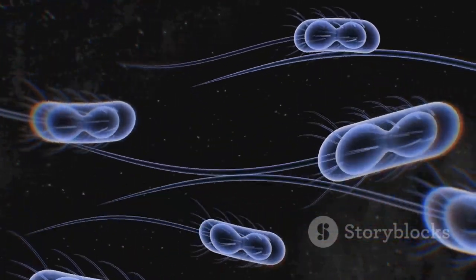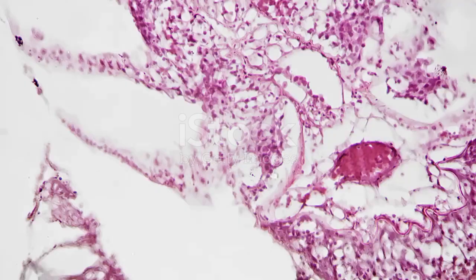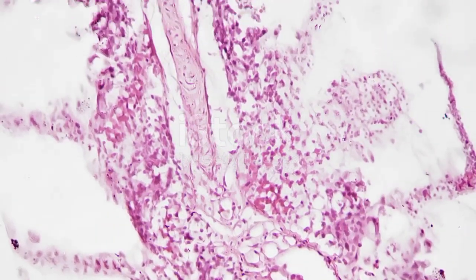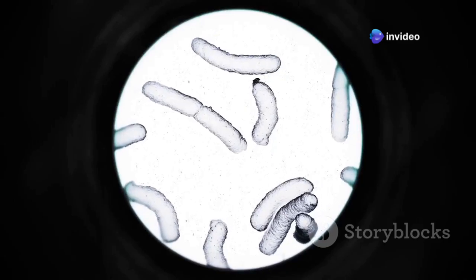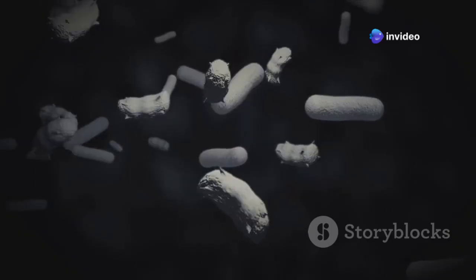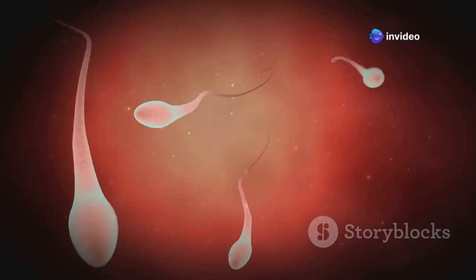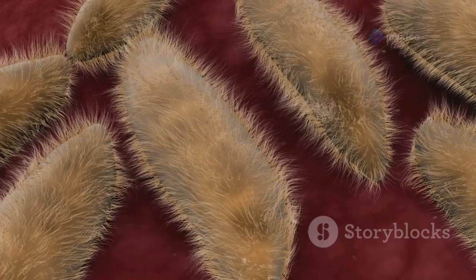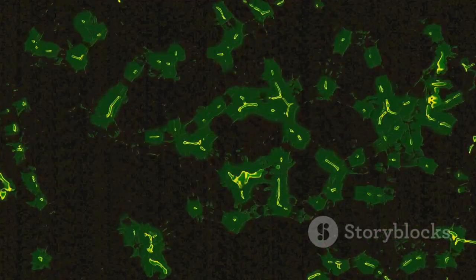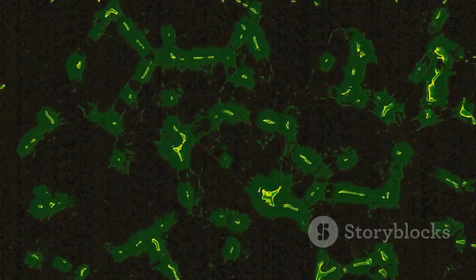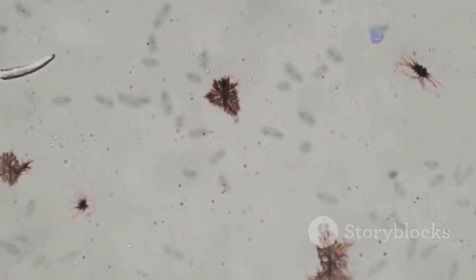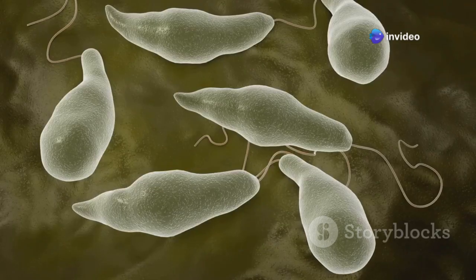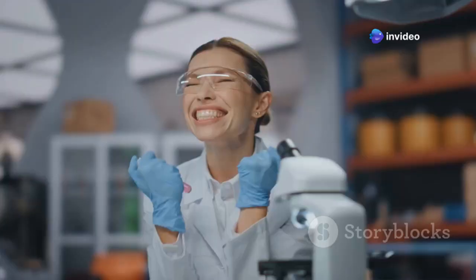Let's wrap things up with a look at flagella and cilia, whip-like appendages that some cells use for movement. Flagella are long and whip-like, propelling cells through their environment — think of sperm cells, which use their flagella to swim. Cilia are shorter and hair-like, moving fluids or particles across the cell's surface. Flagella and cilia show the diversity of structures that cells use to navigate their surroundings.